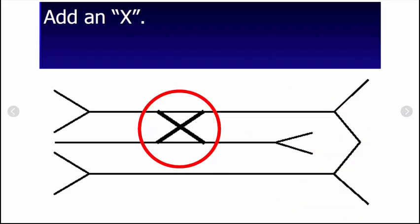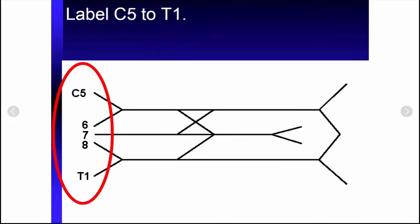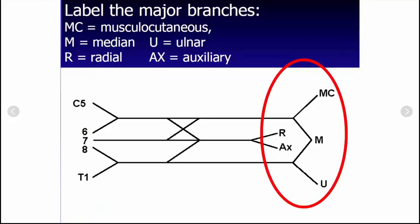Here we draw an X. Now you convert that X into a Y because we have divisions in the brachial plexus too. Then we add C5, 6, 7, 8, and T1. Those are the roots. So we can go ahead and throw on some labels.